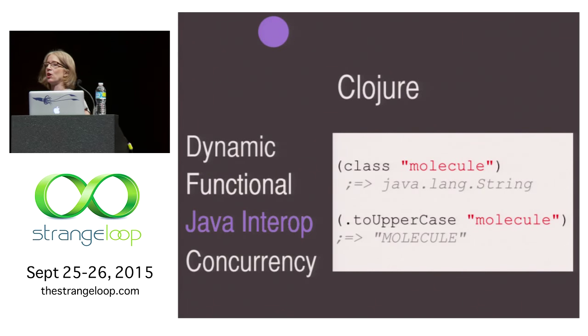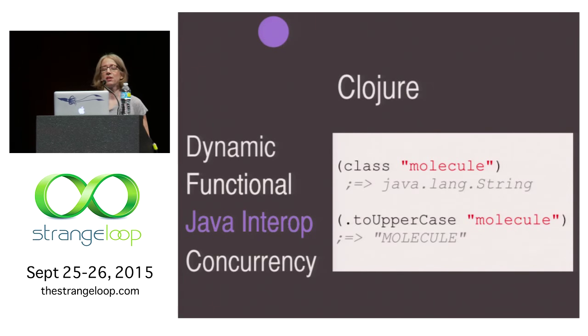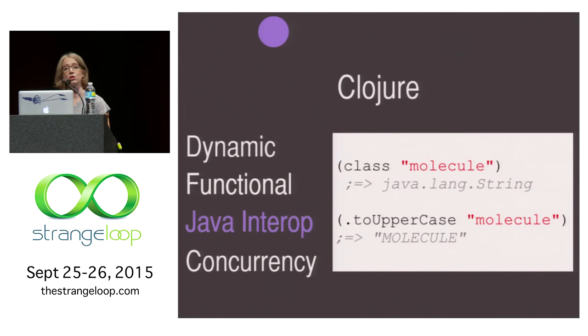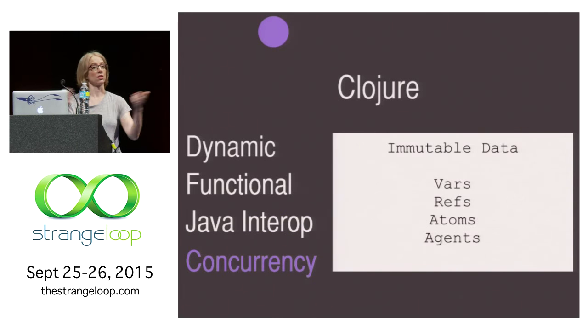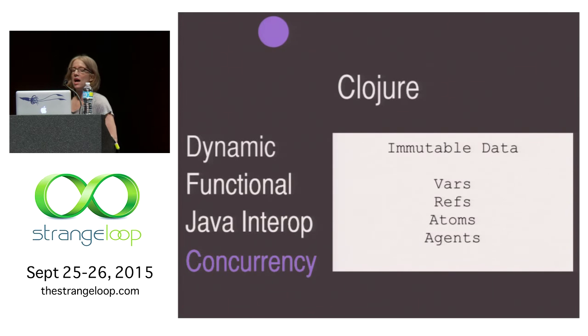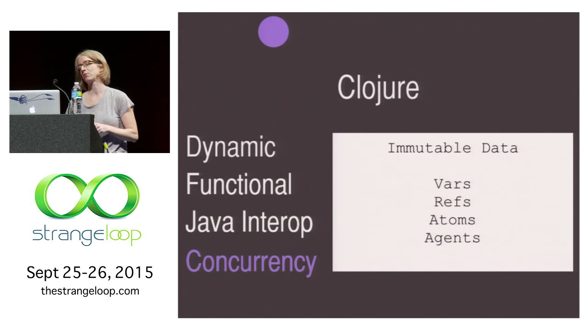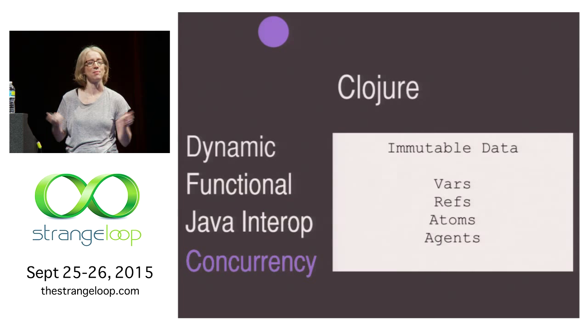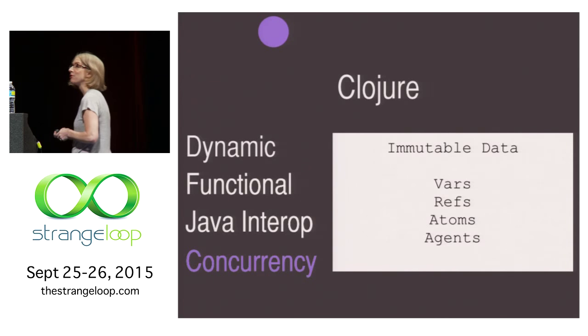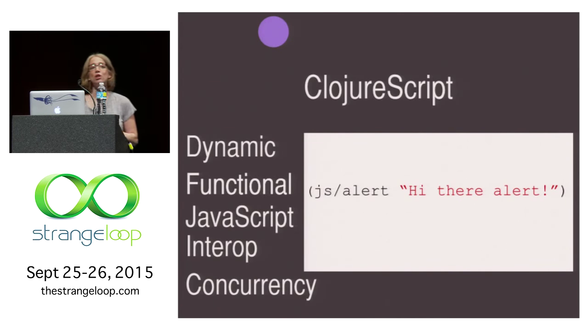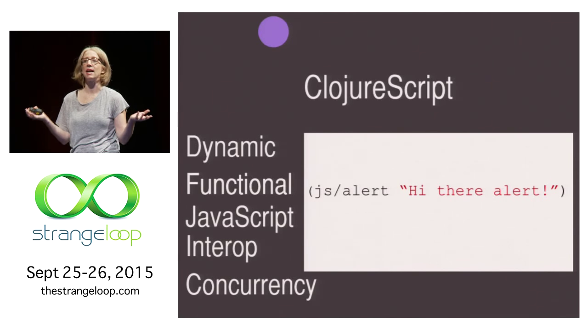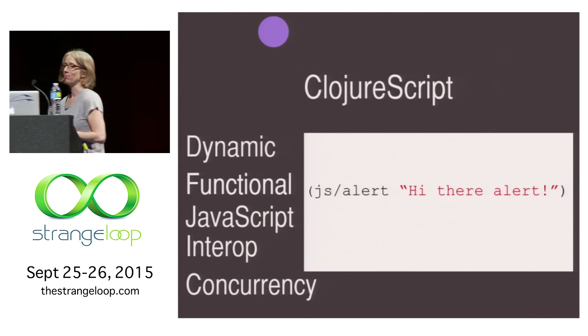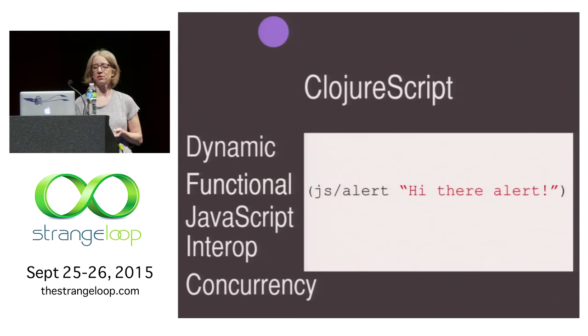It runs on the JVM, so it also has Java Interop, very nice Java Interop. In fact, the strings are just JavaLang strings if you're from the Java world, and you can invoke the methods on them. It supports concurrency, which is a wonderful thing as well. It's got immutable data, and it's got these things called vars, refs, atoms, and agents. There's also this exciting thing called ClojureScript now that lets Clojure compile down to JavaScript and go anywhere JavaScript can go. It has all the same wonderful characteristics of Clojure, but it also has JavaScript Interop.